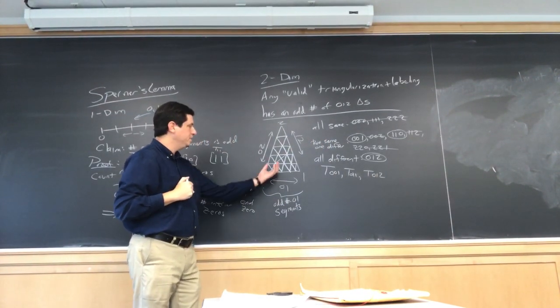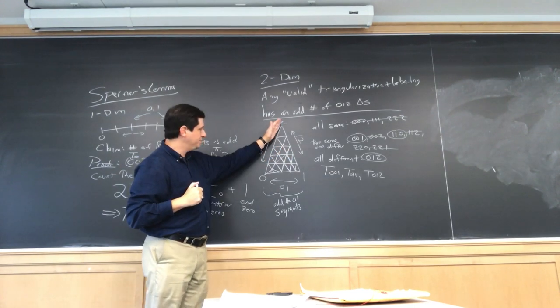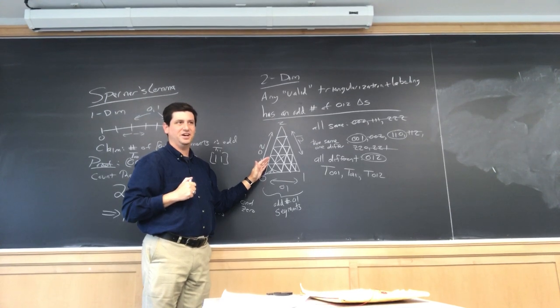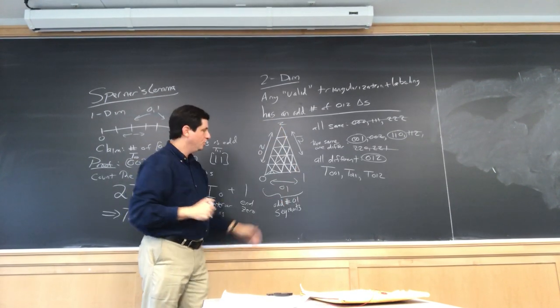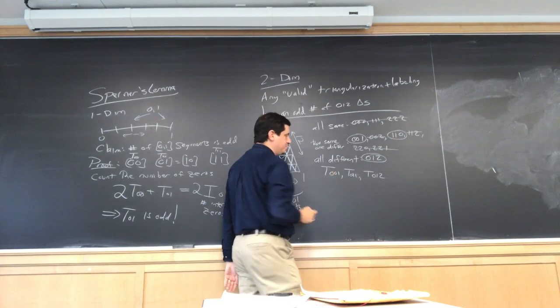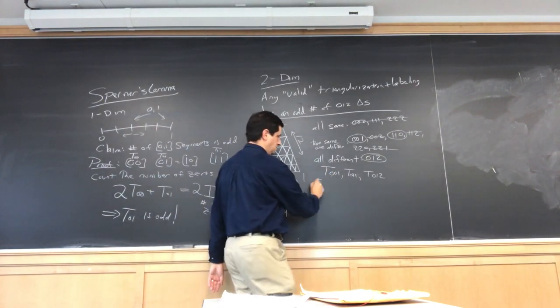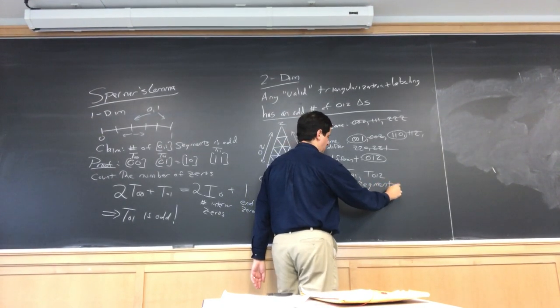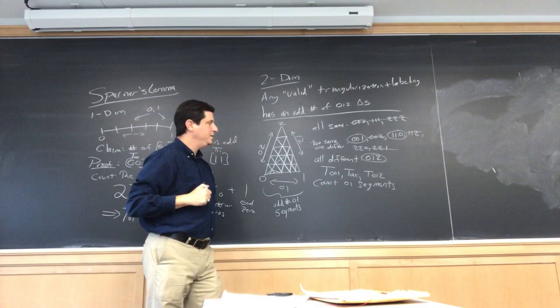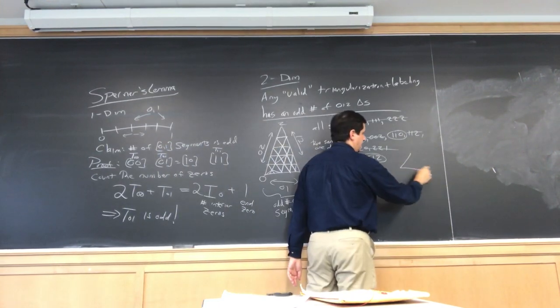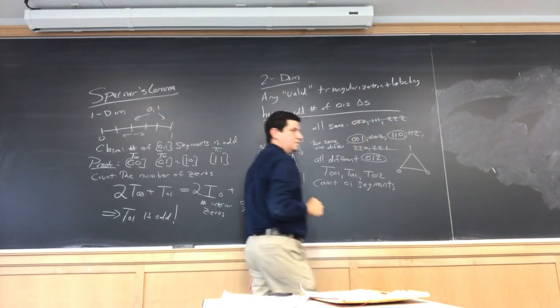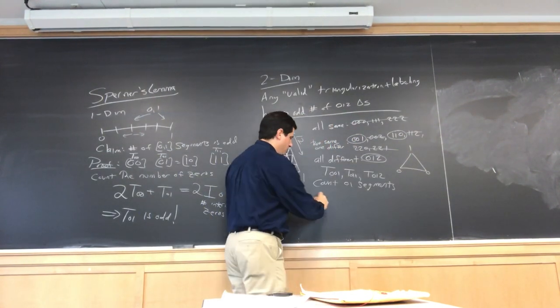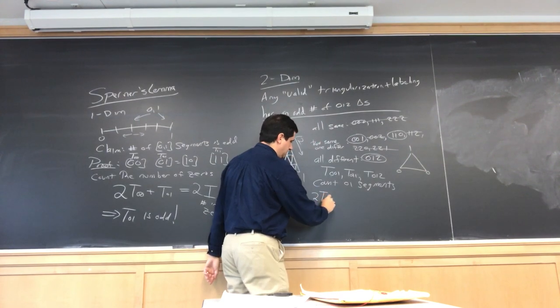So, we can count the number of 0, 1 segments. How many 0, 1 segments are there on this side? None. And on this side? None. So, how many 0, 1 segments does T_0,0,1 give us? Two. Right? The 0, 1 that way. The 0, 1 that way. So, again, 2 times T_0,0,1.